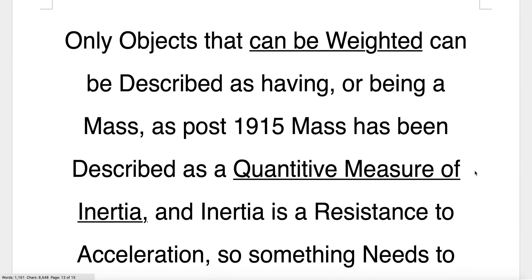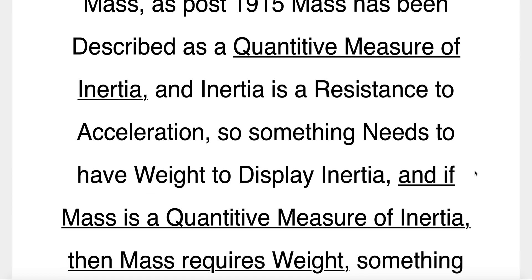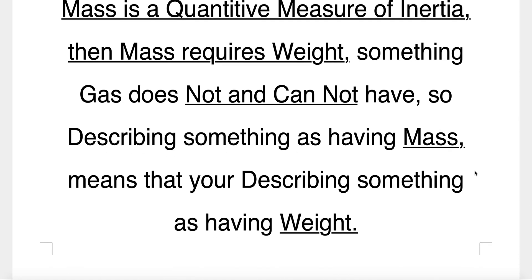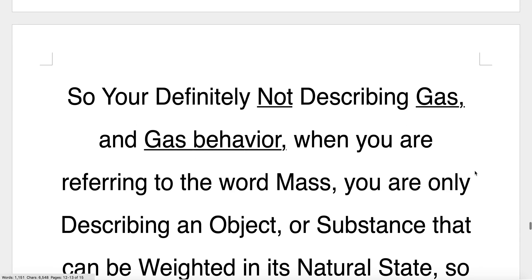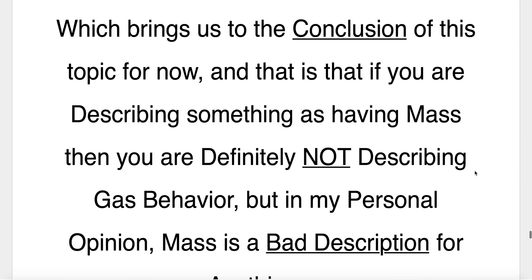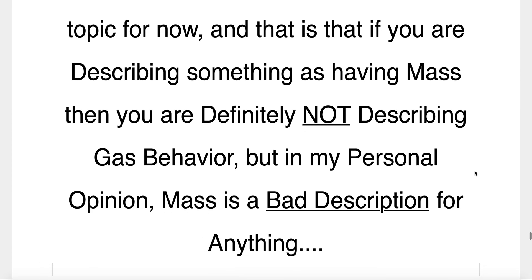Only objects that can be weighed can be described as having or being a mass. Post-1915, mass has been described as a quantitative measure of inertia, and inertia is a resistance to acceleration, so something needs to have weight to display inertia. Mass requires weight — something gas does not and cannot have. So describing something as having mass means you're describing something as having weight — you're definitely not describing gas and gas behaviour. You're only describing an object or substance that can be weighed in its natural state, so not gas. In my personal opinion, mass is a bad description for anything.